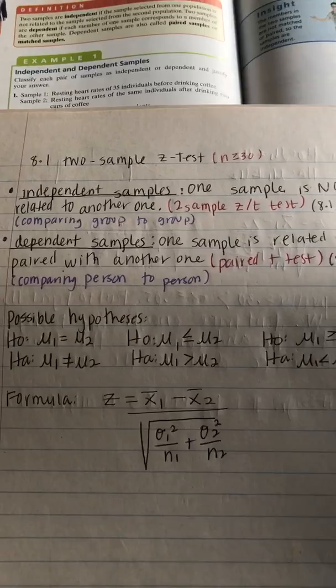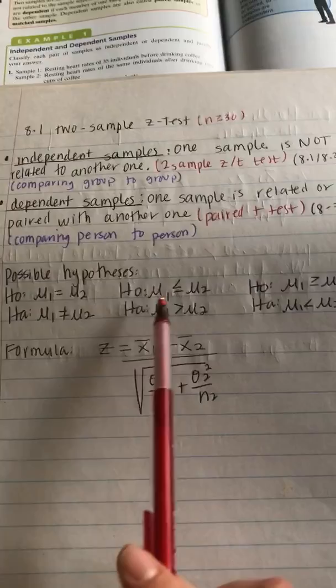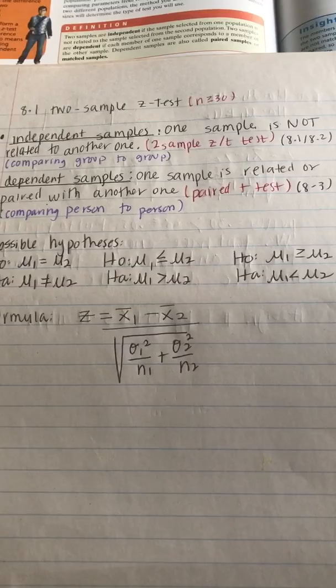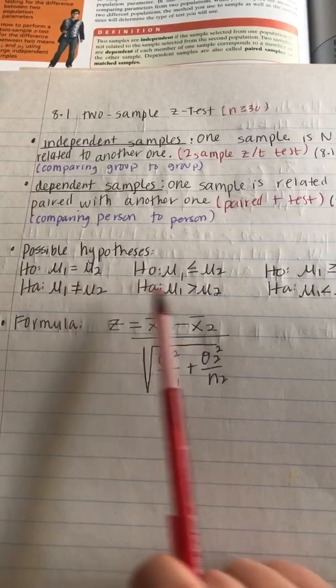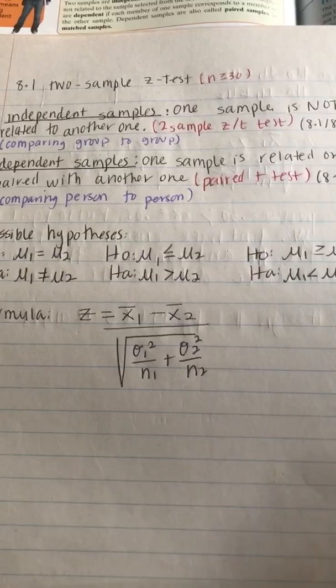For the next two sections we're going to be working with independent samples, where one group is not related to the other. You'll write your hypotheses using one of three forms. The one you choose depends on the wording of the question — words like 'different' or 'change' use the not-equals form; words like 'greater,' 'increase,' or 'higher' use the greater-than form.